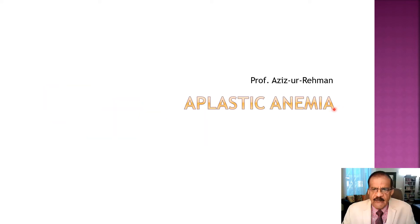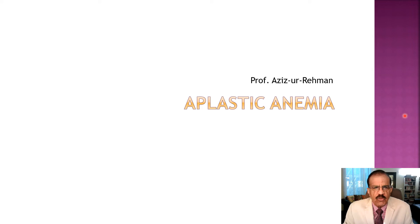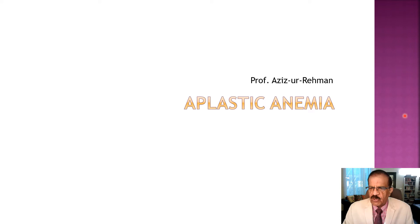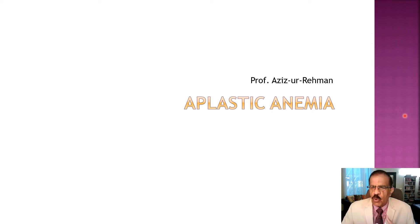Welcome to Medistand - Understanding Medicine. I am Professor Azizur Rahman and today we are going to talk about aplastic anemia. For those who have landed here directly, this is a series of lectures on various types of anemias. We have already discussed common principles, CBC interpretation, hypochromic microcytic anemia, and macrocytic anemia. Today we talk about aplastic anemia - a disorder of the bone marrow where the marrow becomes non-functional or is destroyed, mostly by an autoimmune process.